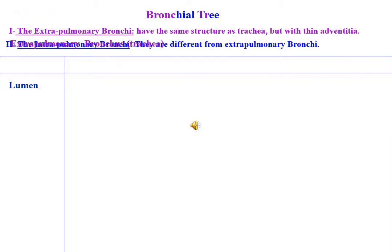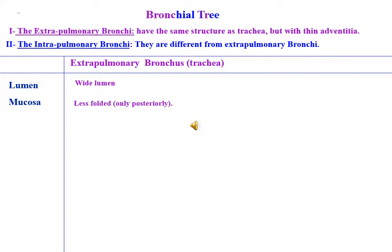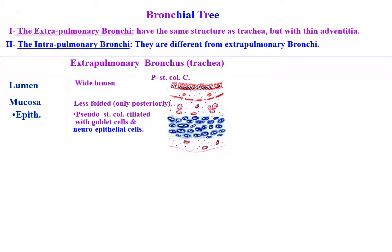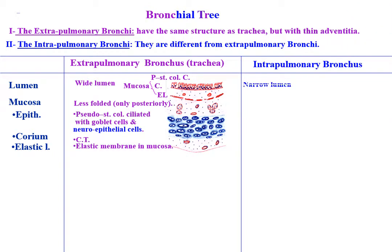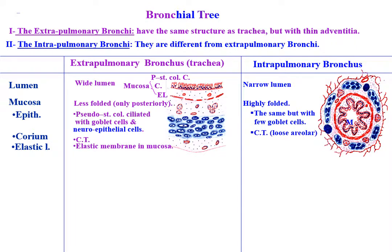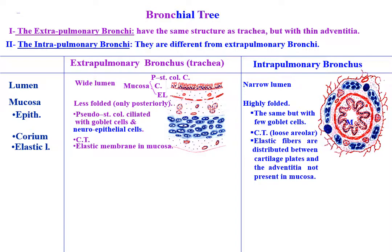Regarding lumen: extrapulmonary bronchi have wide lumen and less-folded mucosa (only posteriorly). Epithelium is pseudostratified columnar ciliated with goblet cells and neuroendocrine cells. There is an elastic membrane in the mucosa. Intrapulmonary bronchi have narrow lumen and highly folded mucosa. Epithelium is the same but with fewer goblet cells. The connective tissue corium is of loose areolar type. Elastic fibers are distributed between the cartilage plates and the adventitia, not present in the mucosa.